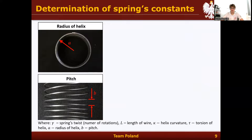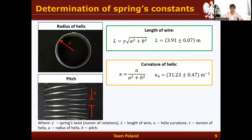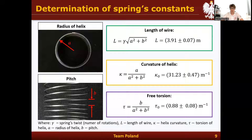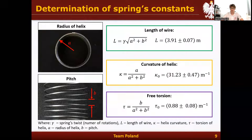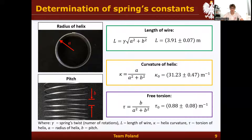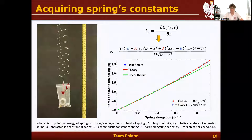Using the fact that the helical spring forms a helix, we can calculate the length of the wire, the curvature of the helix, and free torsion, knowing only the radius of helix, pitch, and spring coil count, which can be easily measured. The other two parameters of a helical spring are related to its material properties. In order to determine them, we need to make separate experiments.